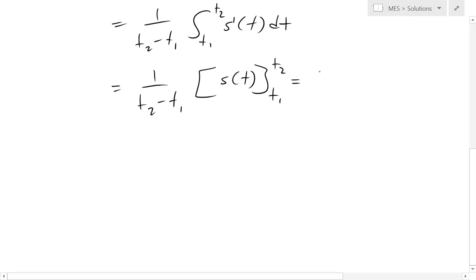And this equals 1 over t2 minus t1. Now we just plug in t2 and t1 there. So we get s(t2) minus s(t1). And now this is our average velocity.